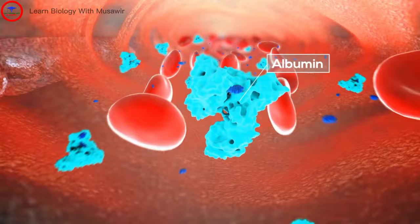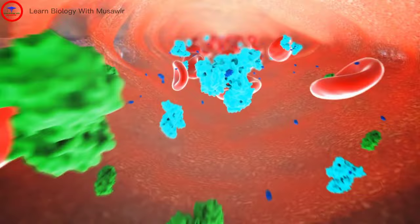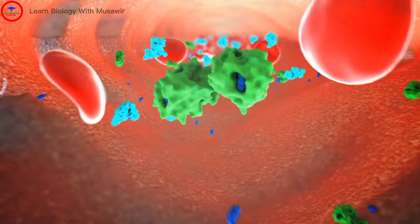Albumin is one such protein produced in the liver that will loosely attach to testosterone. Another protein called sex hormone binding globulin, SHBG, creates a very tight bond with testosterone.